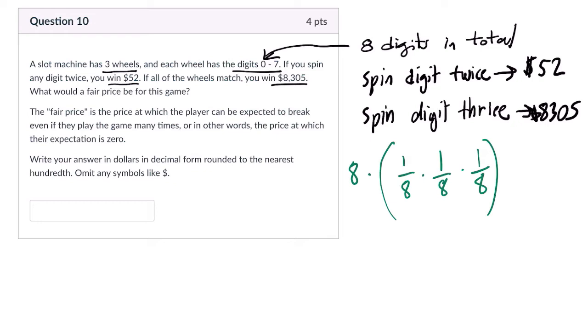This is going to be multiplied by the weight of that winning. And this is going to reduce a little bit nicely here. This is one over eight squared times 8,305. So it's 8,305 over eight squared.